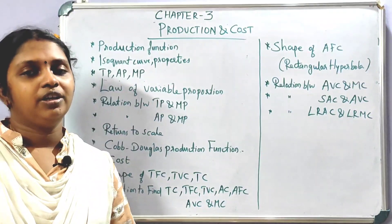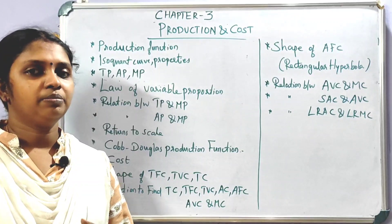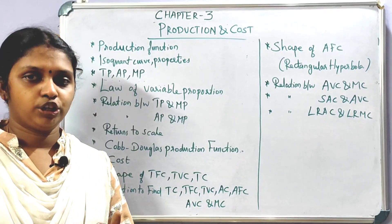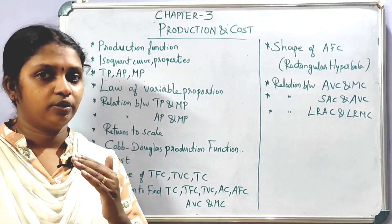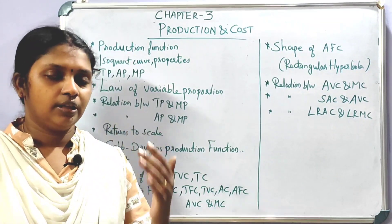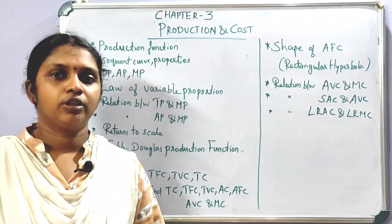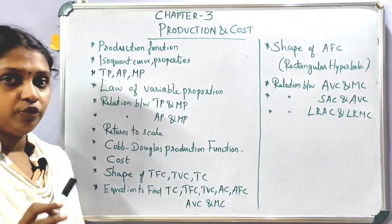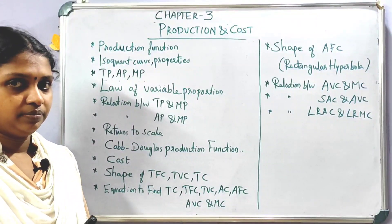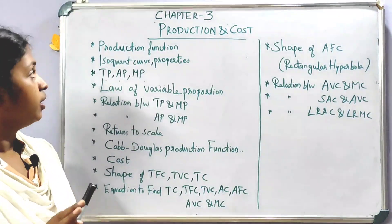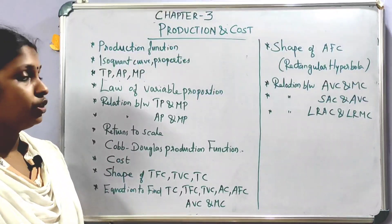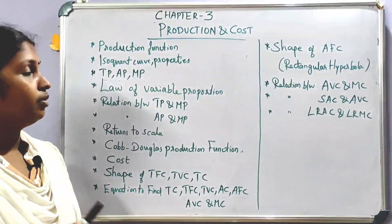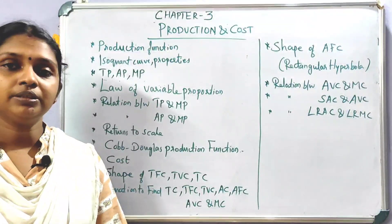Now let's go to the third chapter — Production and Cost. This is an important topic. First is the Production Function: the definition of production function, then Isoquant Curve and its Properties.